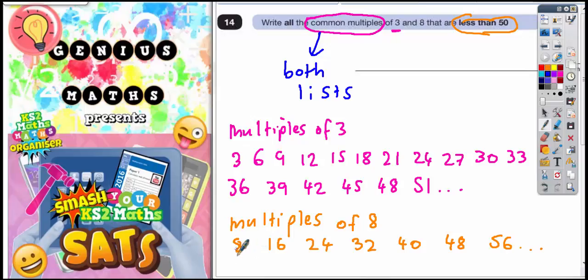So is 8 in the 3 times table? No it's not. Is 16 in the 3 times table? No it's not. Is 24 in the 3 times table? Well yes it is. So let's circle the 24's because that's common to both lists. Is 32 in the 3's? No it isn't. Is 40 in the 3's? No it isn't. Is 48 in the 3's? Well yes it is.